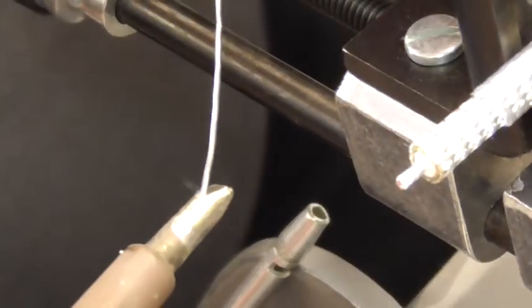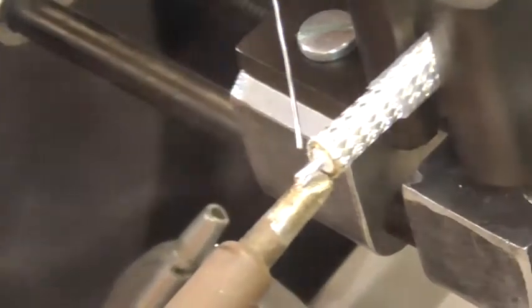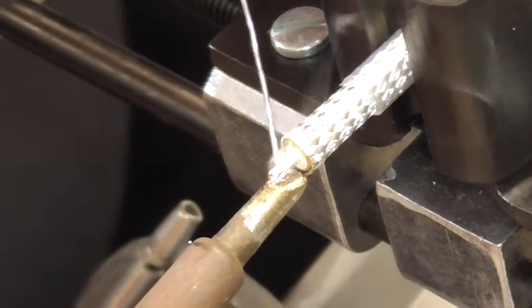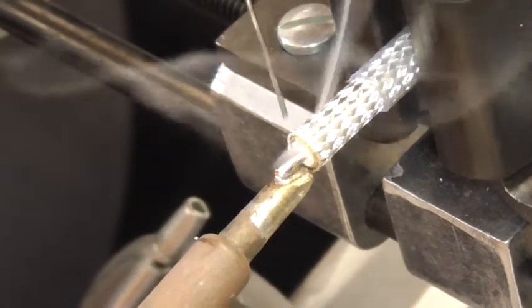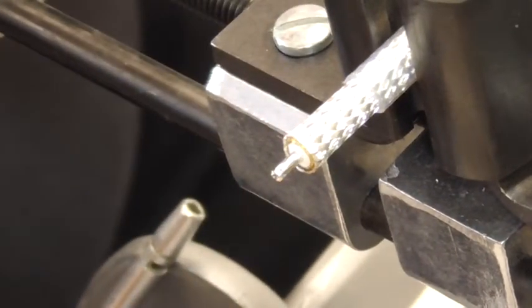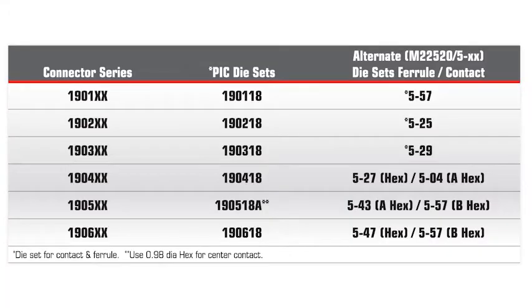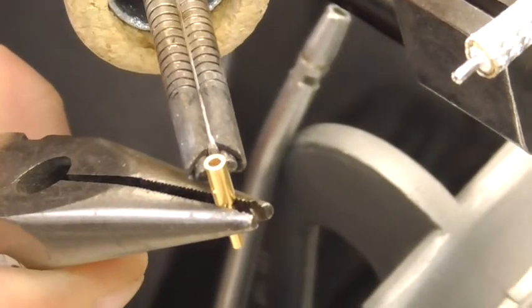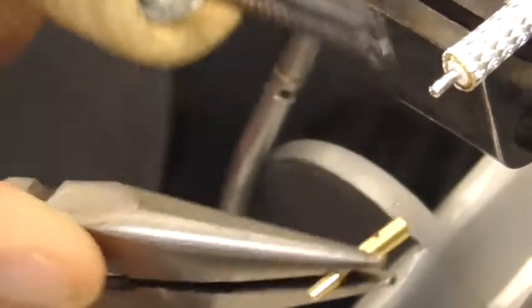Continue by installing the center connector onto the cable center conductor until the end of the contact is flush with the dielectric. Solder or crimp the center contact to the center conductor. Refer to the table on screen for the correct crimp die set. The inspection hole should show the center conductor and, if applicable, the solder.